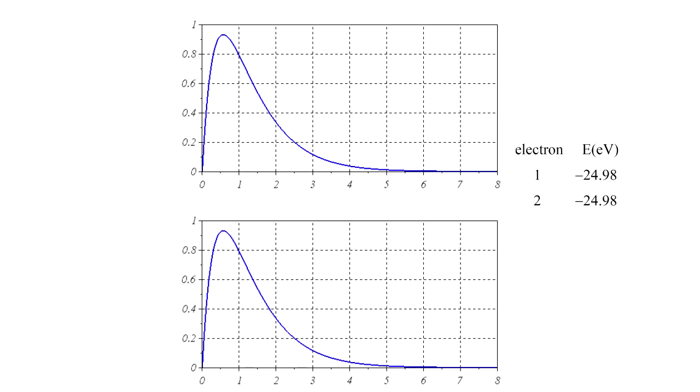The result is a self-consistent field in which the two electrons have identical wave functions. We find, as did Hartree, that the orbital energies are close to minus 25 electron volts. The ionization energy of helium is about 24.6 electron volts. The close agreement of these values suggests that Hartree's method might provide a good approximation to the actual wave functions of multi-electron atoms.